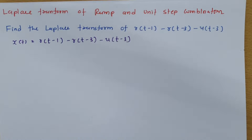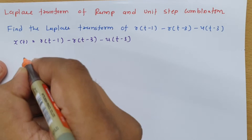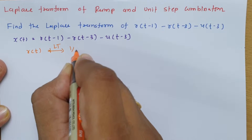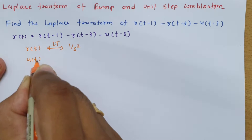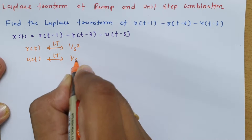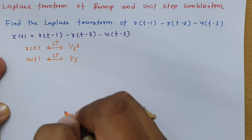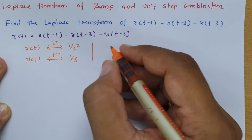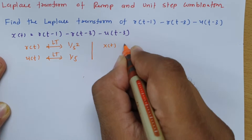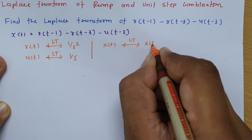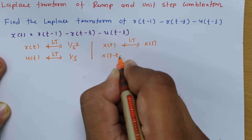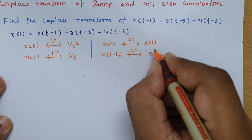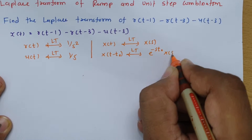We should know the basic Laplace transform functions. For a ramp signal, the Laplace transform is 1/s², and for a step signal, it is 1/s. The second property is for shifting: if x(t) has Laplace transform X(s), then x(t - t₀) has Laplace transform e^(-s·t₀) · X(s).